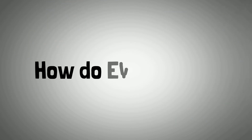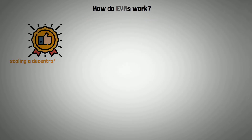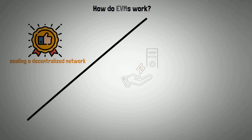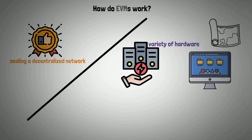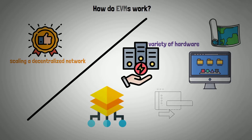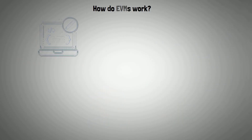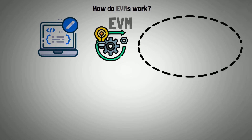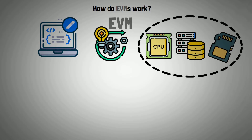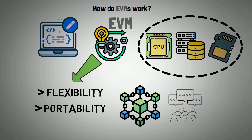But how do EVMs work? Virtual machines are one of the best methods for scaling a decentralized network. They can be used to run on a variety of hardware and operating systems from any location, acting as a layer between the machines and the code they execute. Although nothing more than pieces of code, virtual machines like EVM perform operations that physical machines with CPUs, memory, and storage do. Virtual machines theoretically allow for the flexibility and portability that decentralized networks require because anyone can run them.